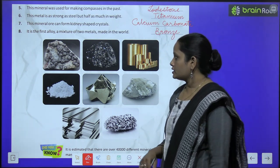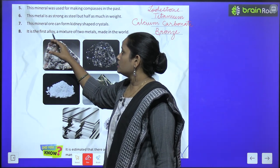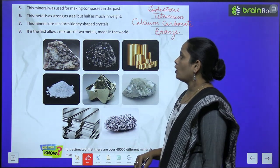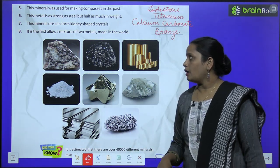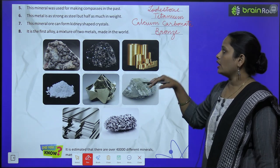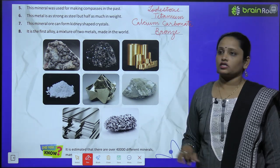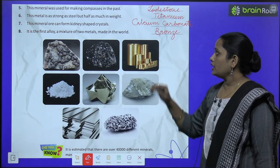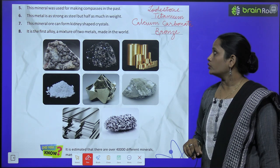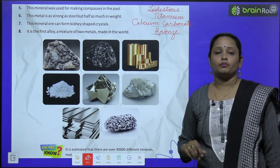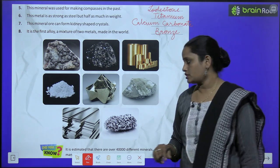Next: it is the first alloy, a mixture of two metals. Yeh pahla alloy hai jo mixture hai two metals ka, made in the world. And iska naam hai bronze.